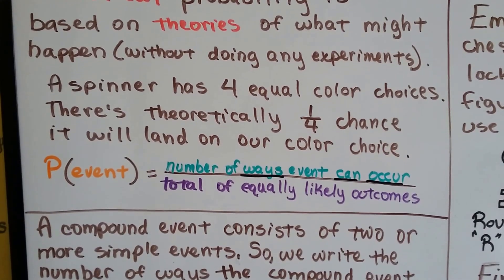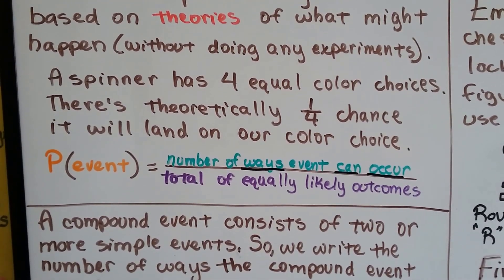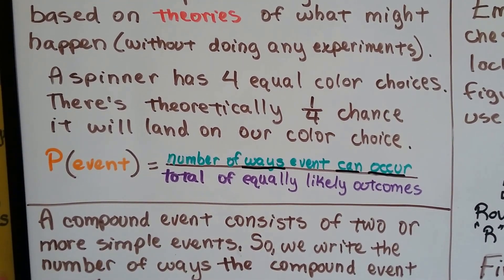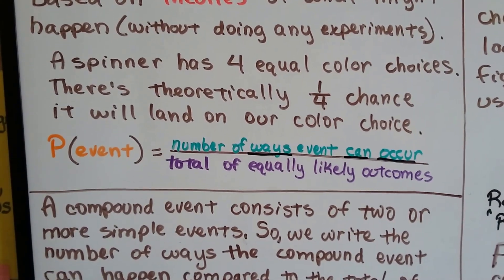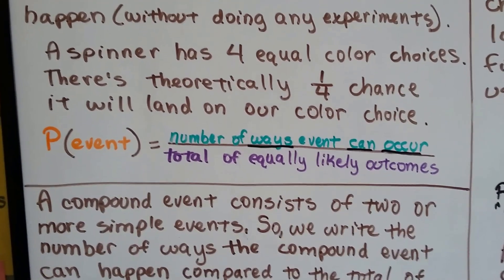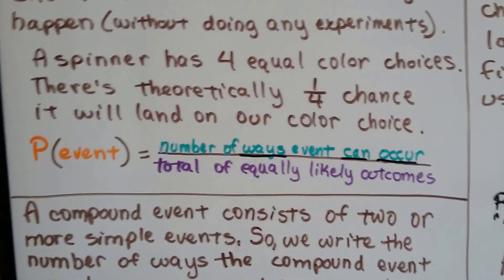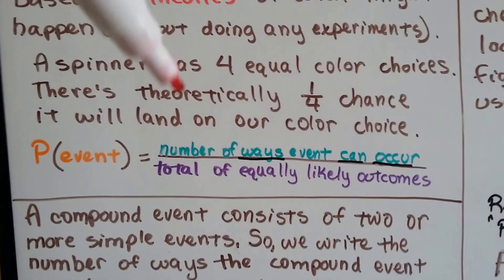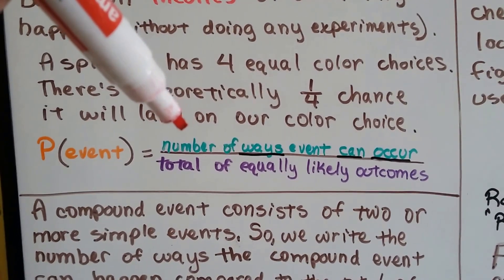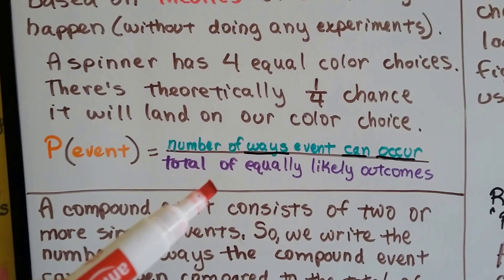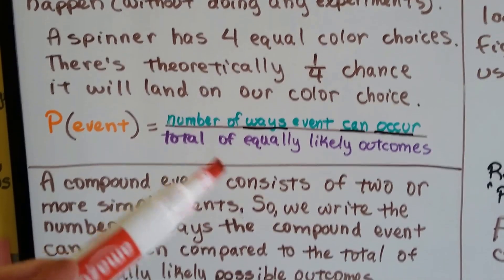A spinner has four equal color choices. There's theoretically a one out of four chance it'll land on our color choice. So the probability of an event — P(event) — is the number of ways the event can occur as a numerator over the total of equally likely outcomes as a denominator.